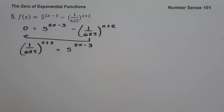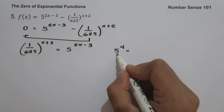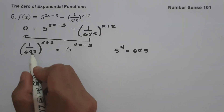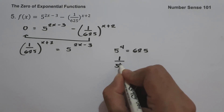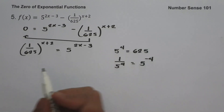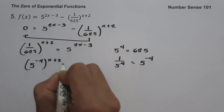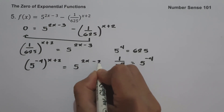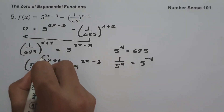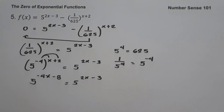To find the value of x, we must have the same base. Let us change 625 as 5 raised to 4, because 5 multiplied four times gives 625. Since 625 is in the denominator, we have 1 over 5 raised to 4, which equals 5 raised to negative 4. So we rewrite the left side as 5 raised to negative 4 raised to (x plus 2). Multiplying: negative 4 times x = negative 4x, and negative 4 times 2 = negative 8. So we have 5 raised to (negative 4x minus 8) = 5 raised to (2x minus 3).